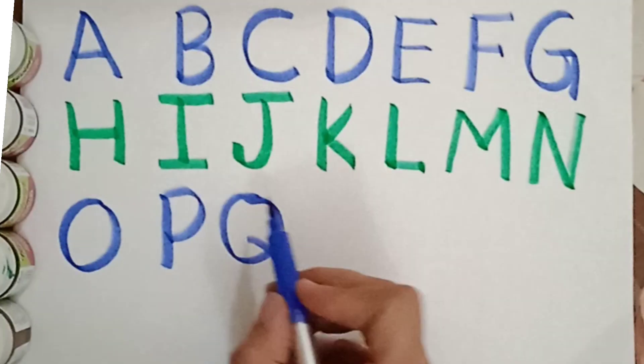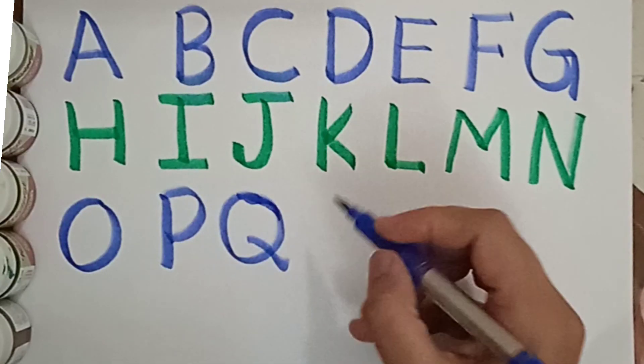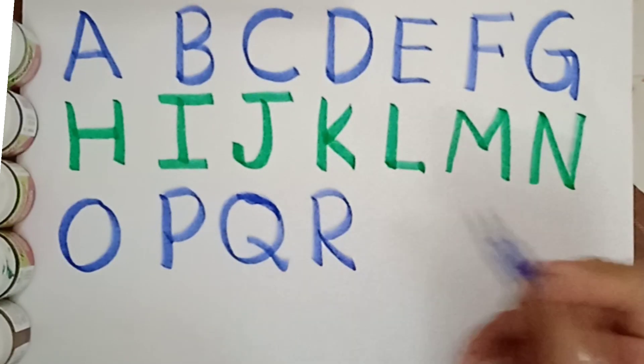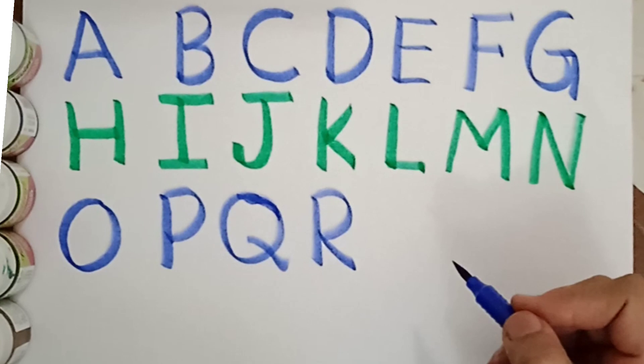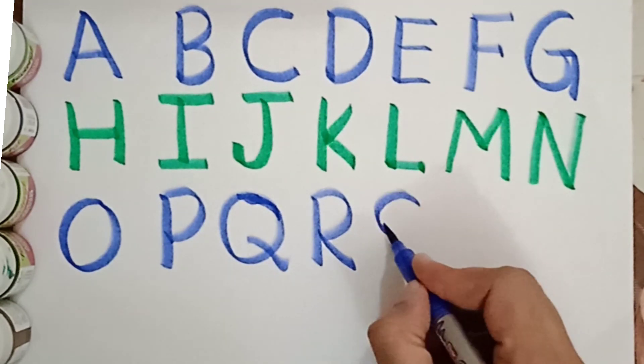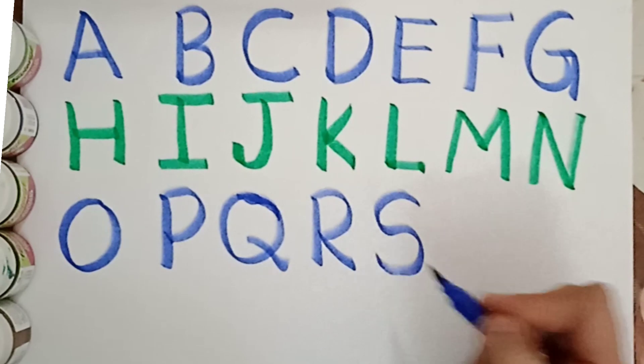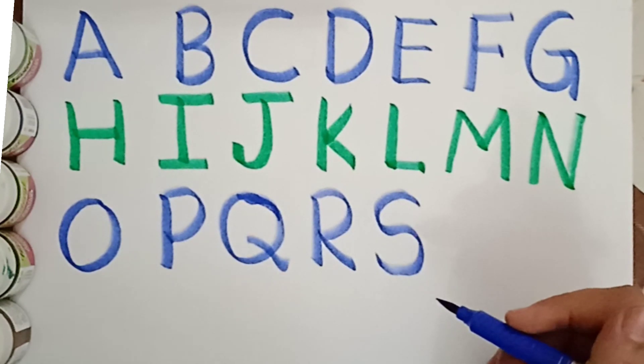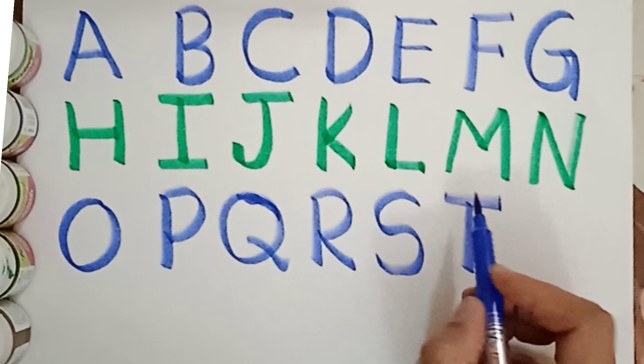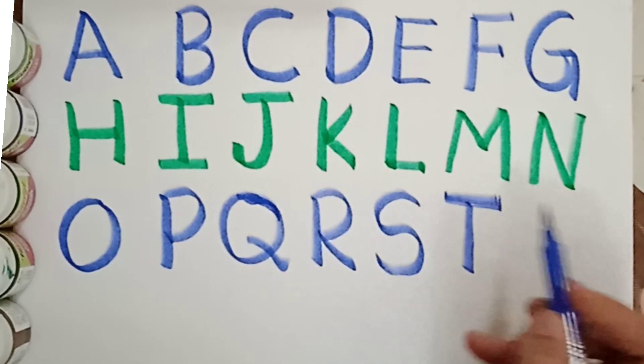Next letter is R. R for rat. R for rat. And what comes after R? S. S for sunflower. S for sunflower. Next letter is T. T for tiger. T for tiger.